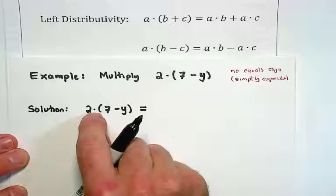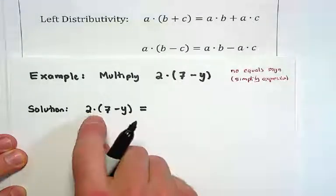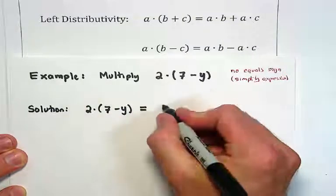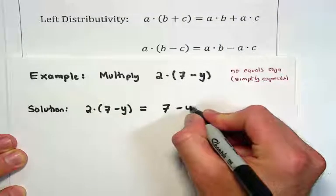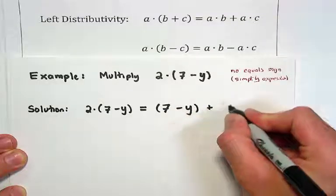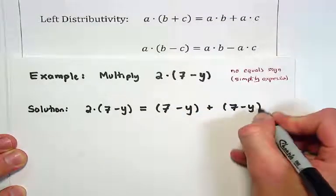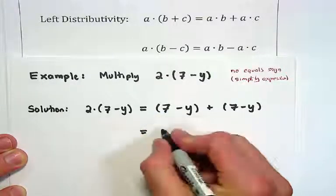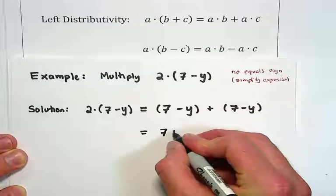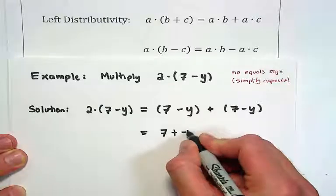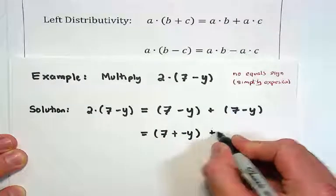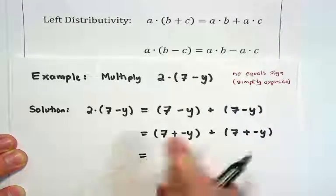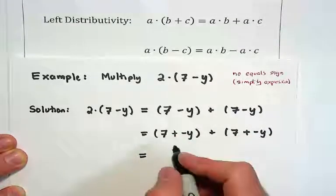Remember that multiplication counts the number of additions. In this case I'm going to add the expression 7 minus y to itself 2 times — take that expression and add it to itself twice. Right now we've grouped these subtractions together, but we know that each subtraction can actually be written as an addition of a negative number. Here I've got 7 plus negative y. Addition is associative.